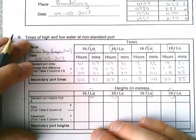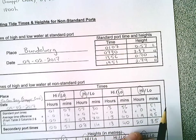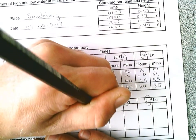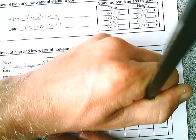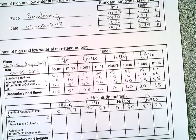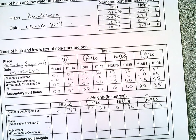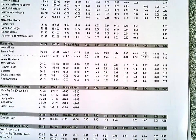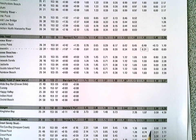We do the same with the heights. Instead of times, we're putting the heights across: 0.57, 3.37, 0.70, and 2.79. The ratio from Table 2, Column 9, for Snapper Creek — scrolling down to Tin Can Bay — our ratio is 0.8. So we're going to multiply all of those height values by 0.8.